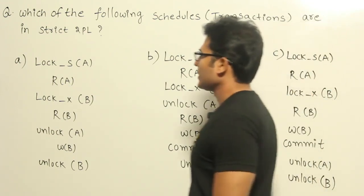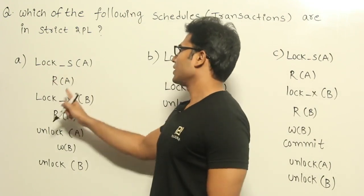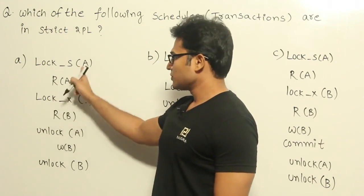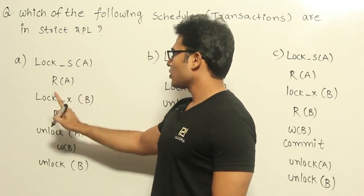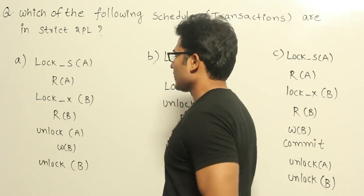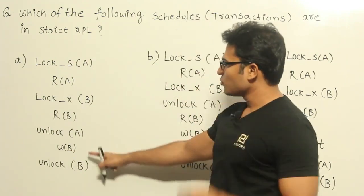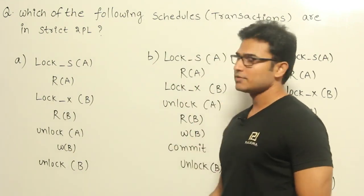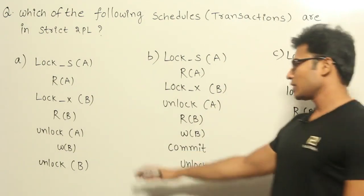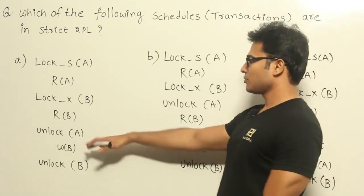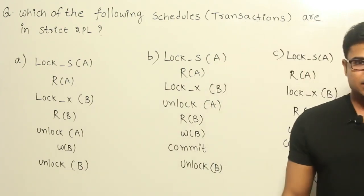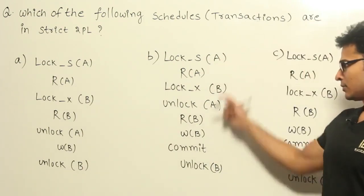Let's look at the first one. There's a shared lock on A, and then we are taking an exclusive lock on B. Now you are actually unlocking both of them before you commit — that is why you cannot say it is strict. After committing only you are supposed to unlock, but here you unlock before committing, therefore it is not strict.